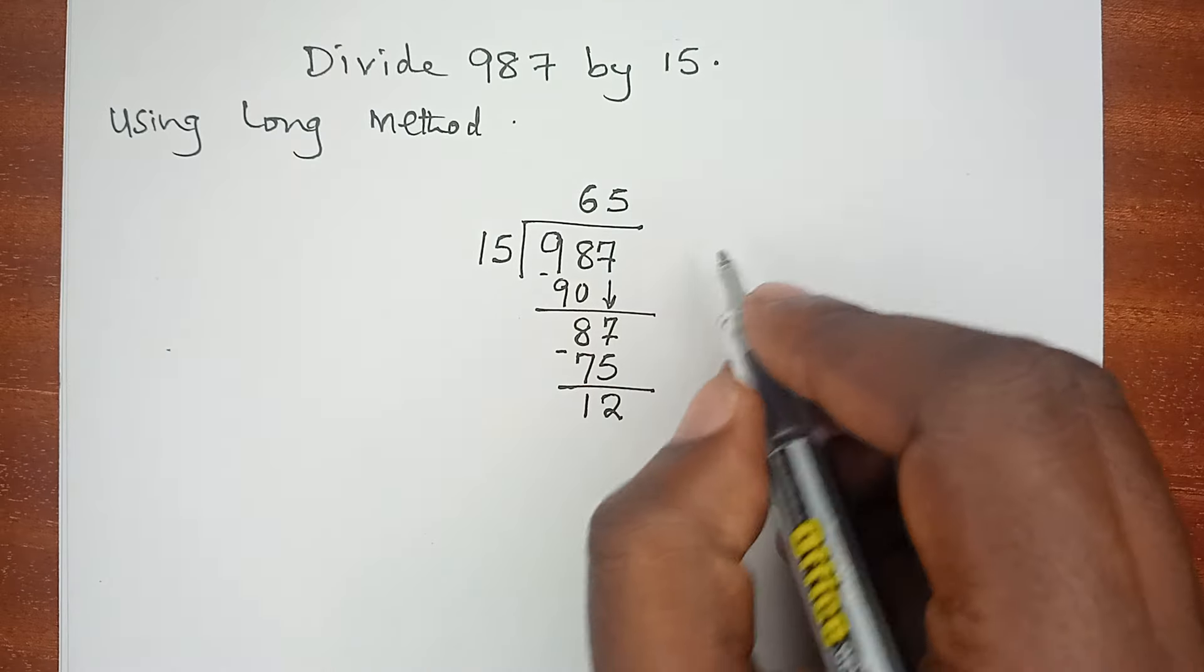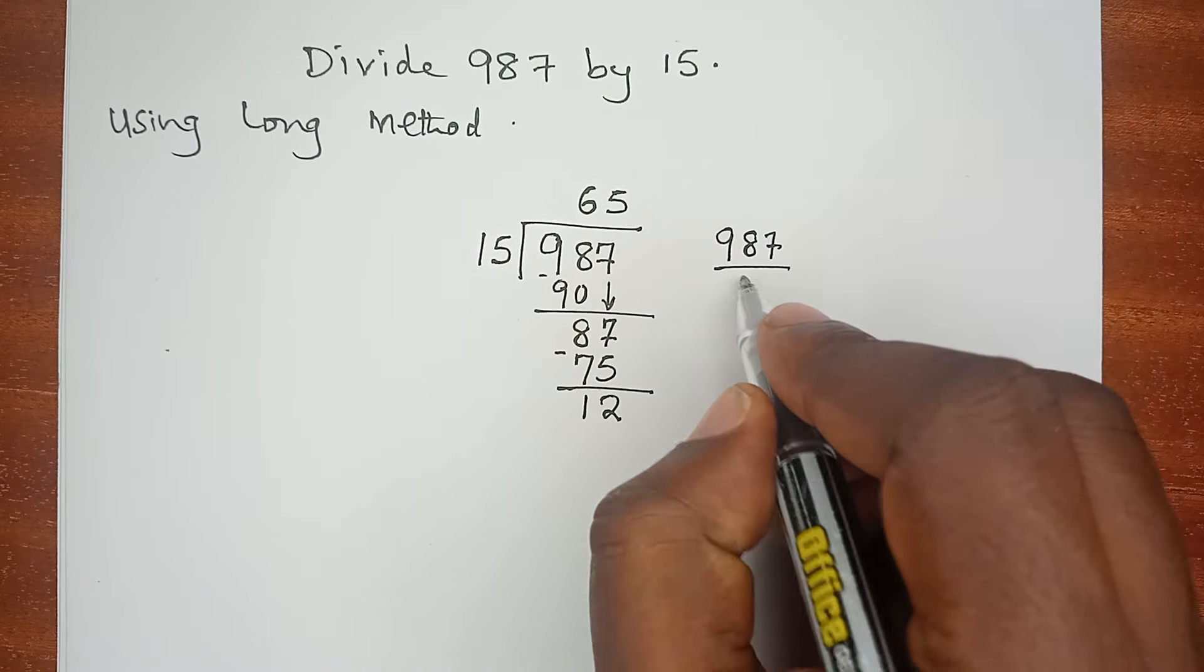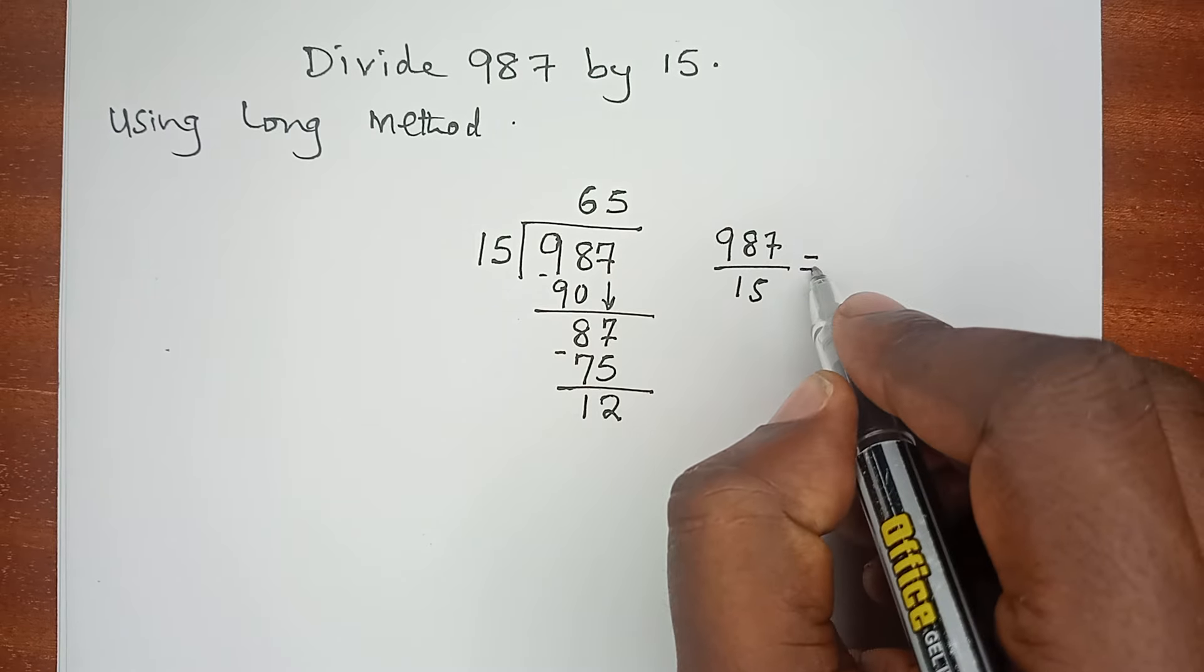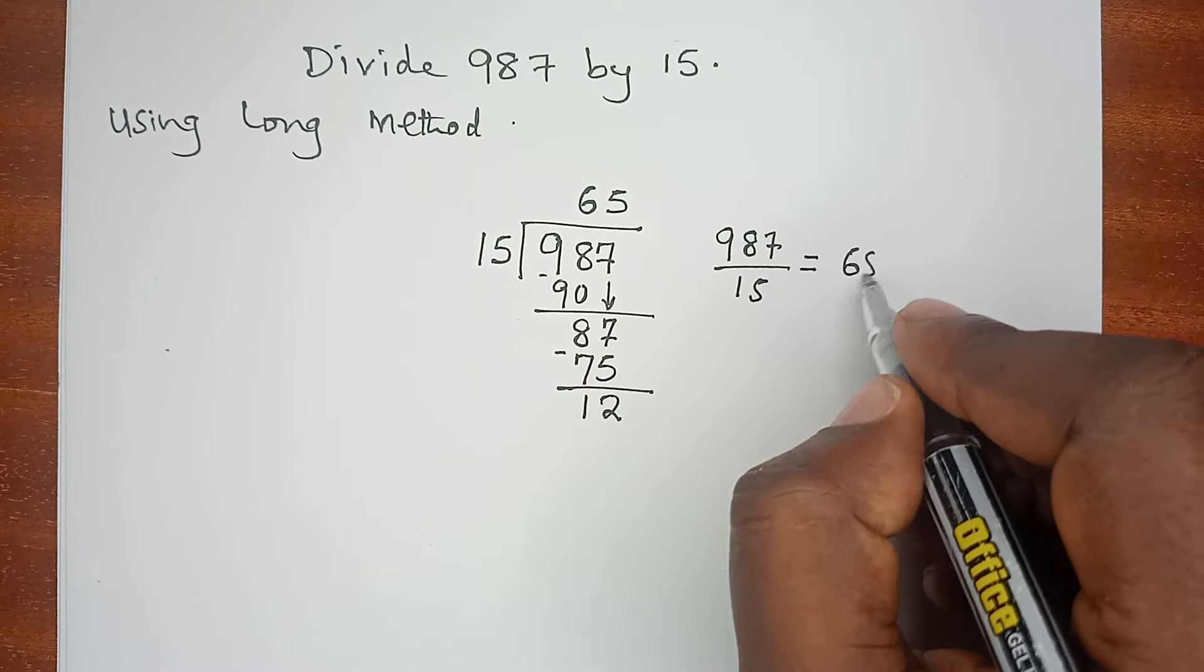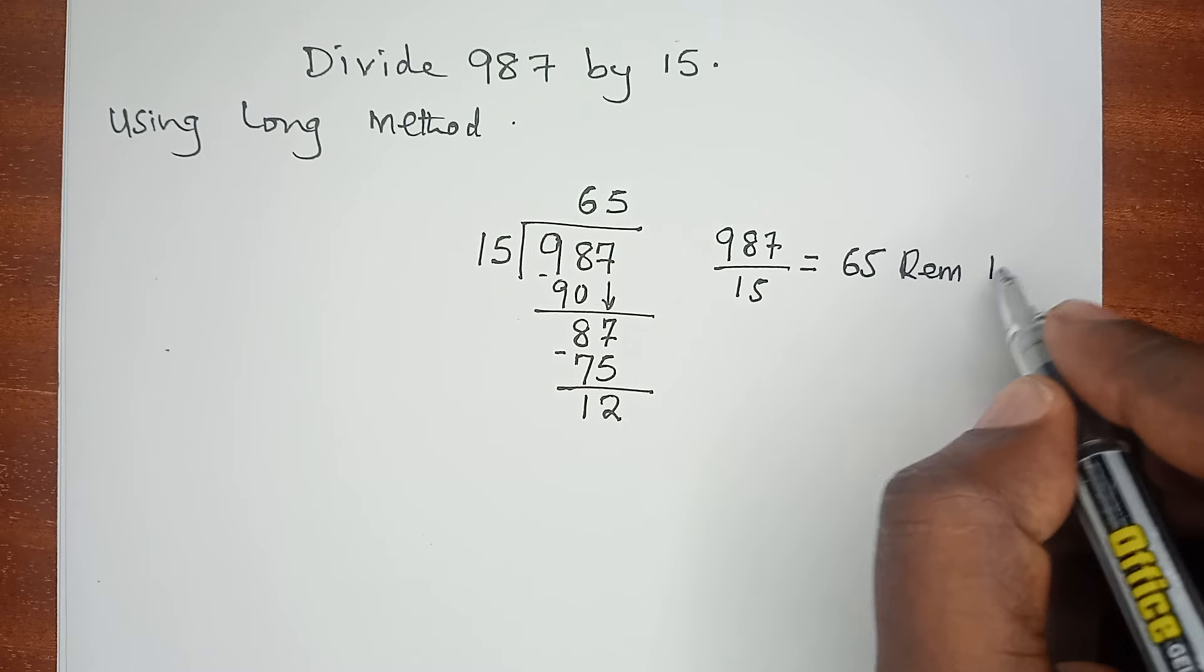In other words, what we are saying is that 987 divided by 15 equals 65, remainder 12.